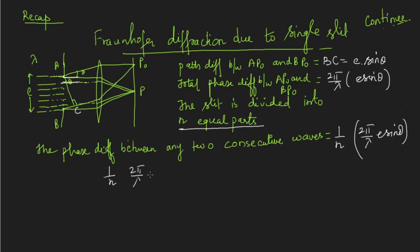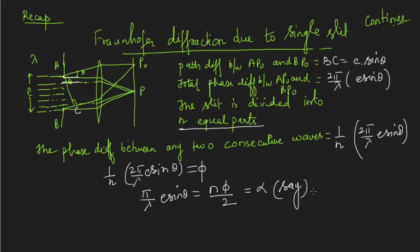All consecutive waves will have the same phase difference because we divided the total slit into equal parts. Let us denote this phase difference between two consecutive waves as φ. Taking n and 2 to the other side, I get π·e·sinθ/λ = nφ/2. Let us call this alpha (α) for use in further calculations. I know the phase difference between two consecutive waves and I have n such waves. At the end, n tends to infinity, representing the real situation, but for now let us take n to be finite.